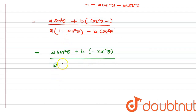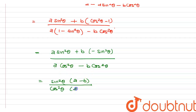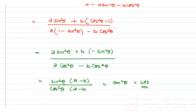We can now factor sin²θ from the numerator and cos²θ from the denominator, giving (a − b)·sin²θ / (a − b)·cos²θ. Cancelling (a − b) from both, this simplifies to sin²θ / cos²θ = tan²θ, which equals the left-hand side. Hence proved.